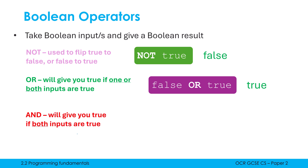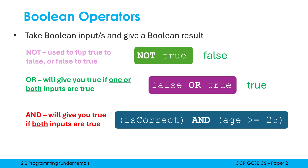AND will give you true only if both inputs are true. If one of those inputs is false, the whole thing is false. To give a more realistic example where we've not just got a Boolean value as our input: here we've got isCorrect, which must be a variable, and we've also got age, which is a variable checked as bigger than or equal to 25. But we can't tell just from this statement what this is going to result in, because we don't know what isCorrect or age are.